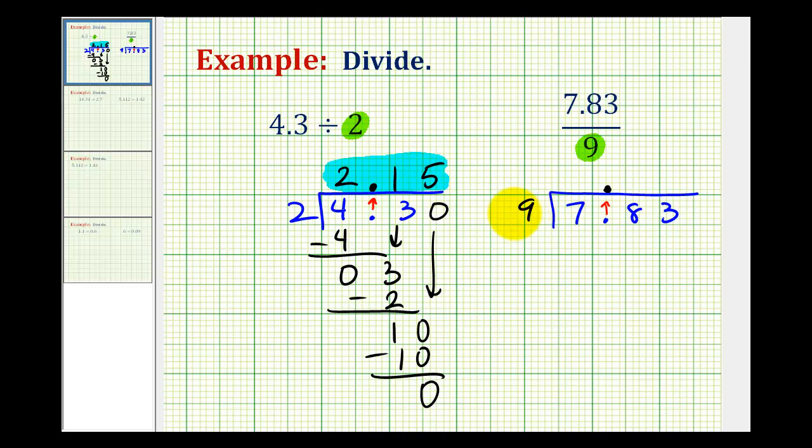So we first need to determine how many 9's there would be in 78. And that would be 8, because 8 times 9 is 72. And as long as this difference is less than 9, we know this 8 is correct. So we have 6, and this would be 0. Bring down the next digit, which is 3.